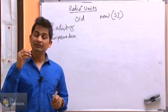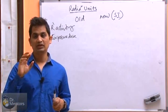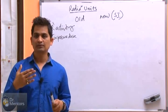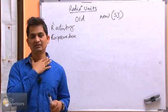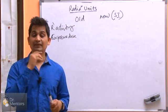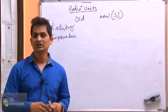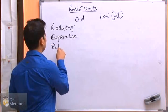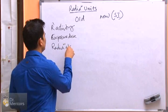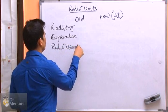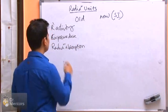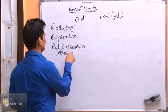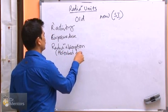Whatever radiation we are exposed to, it is not that we absorb the entire dose. The absorbed dose may differ, and that's why the next unit we should know is the unit of radiation absorption, or absorbed dose.